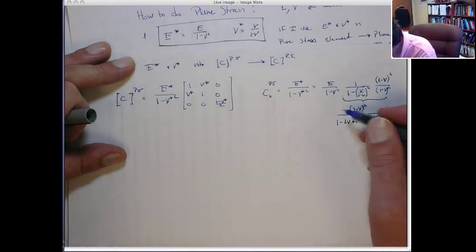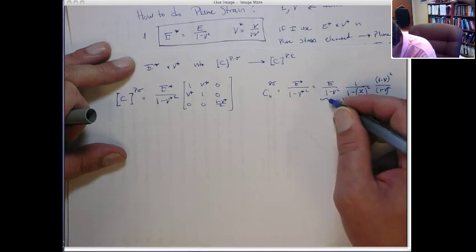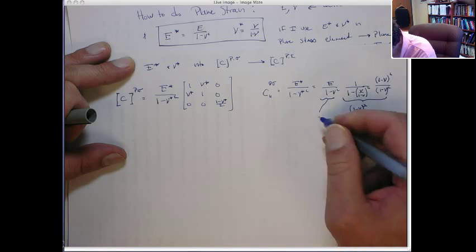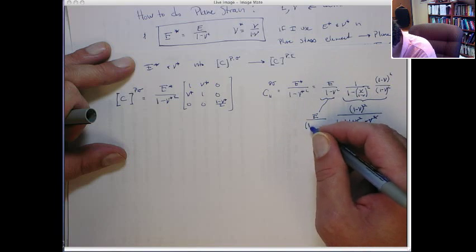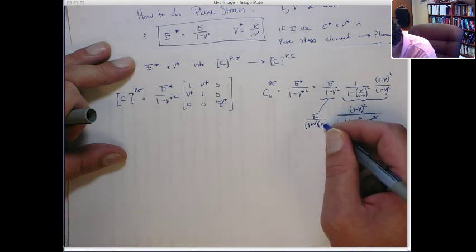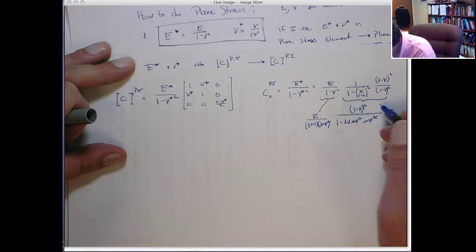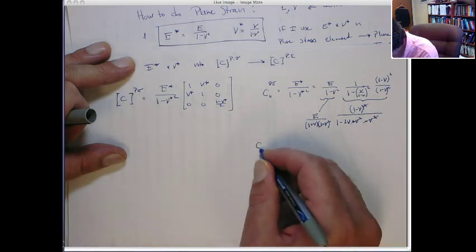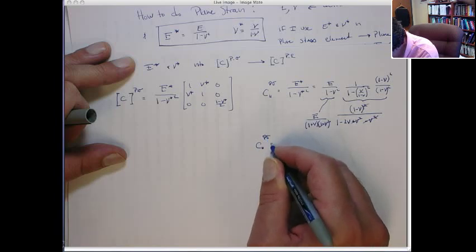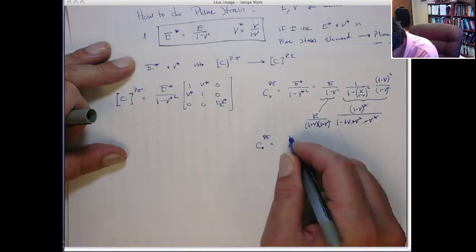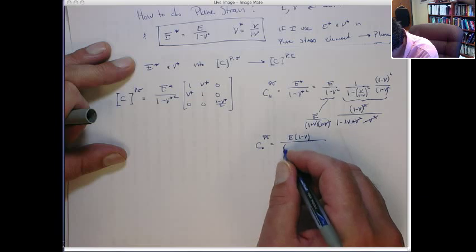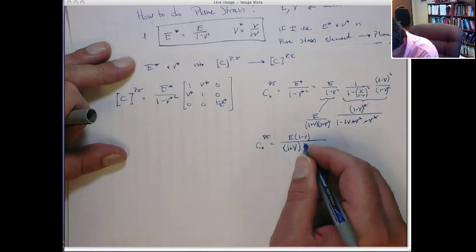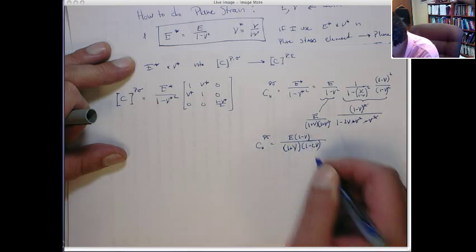The front term, well, I still just have this term here. It comes as follows: E times 1 minus ν squared, but that's the difference of two squares, so I can write that as 1 plus ν times 1 minus ν. This minus ν can cancel with one of these. And now I'm left with the first term for the plane stress is now simply E times 1 minus ν over 1 plus ν times 1 minus 2ν. Okay?